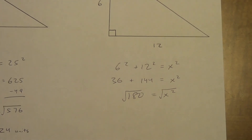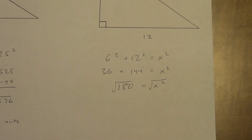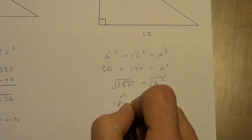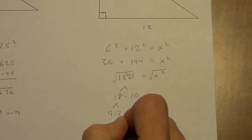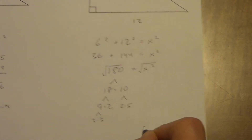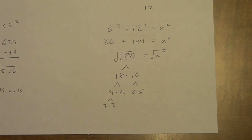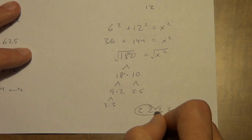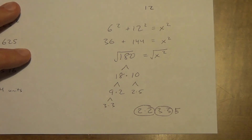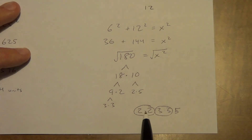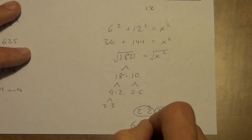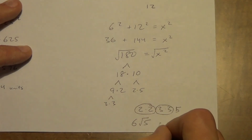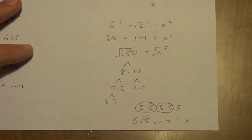We're going to go with an exact answer using the factor tree method. Taking 180 — it's divisible by 18 and 10. 18 gives 9 and 2; 10 gives 2 and 5; 9 gives 3 and 3. So we have two 2s, two 3s, and a 5: 2 × 2 × 3 × 3 × 5. We look for pairs: a pair of 2s and a pair of 3s, with a single 5. Pairs go outside the square root — 2 times 3 is 6 — and the 5 stays inside. So 6 root 5 equals X, and our answer is 6 root 5 units.